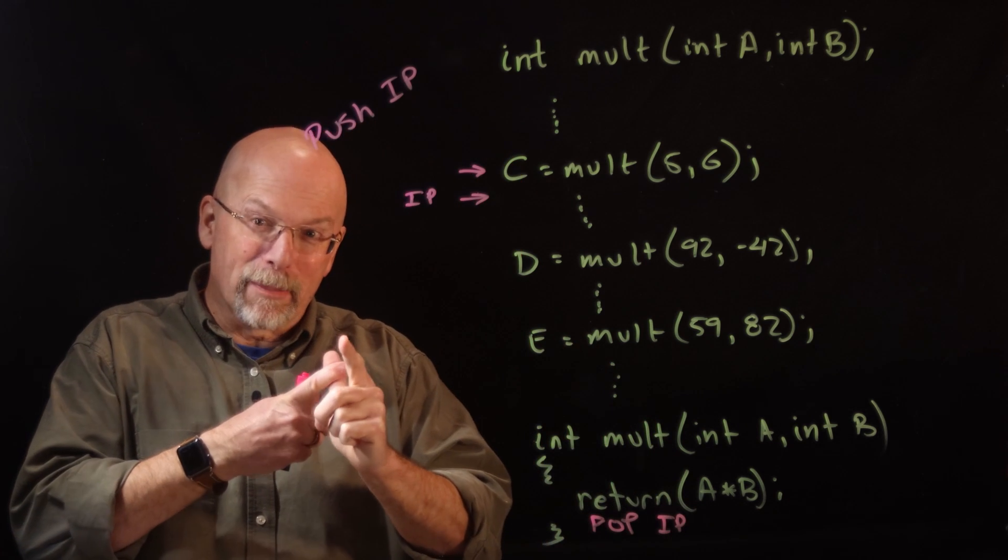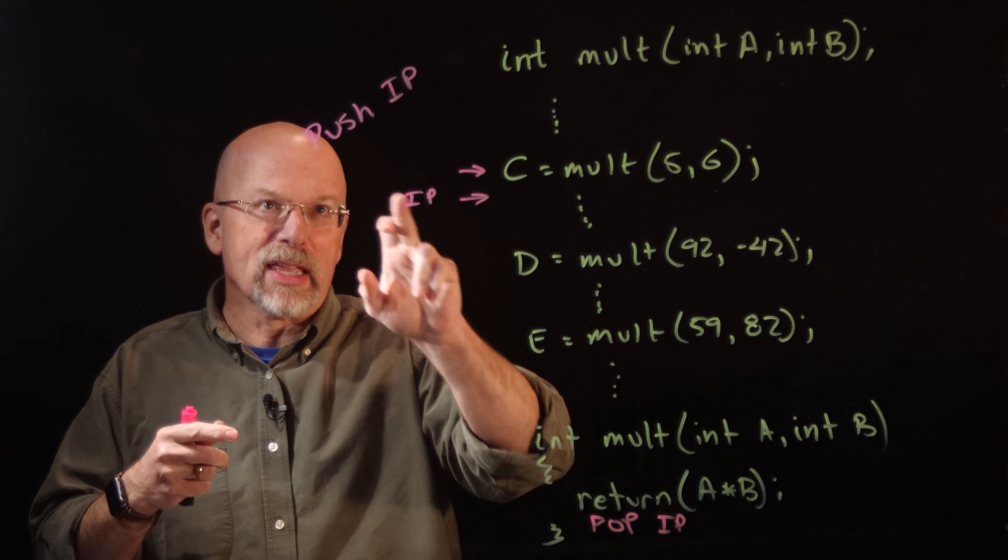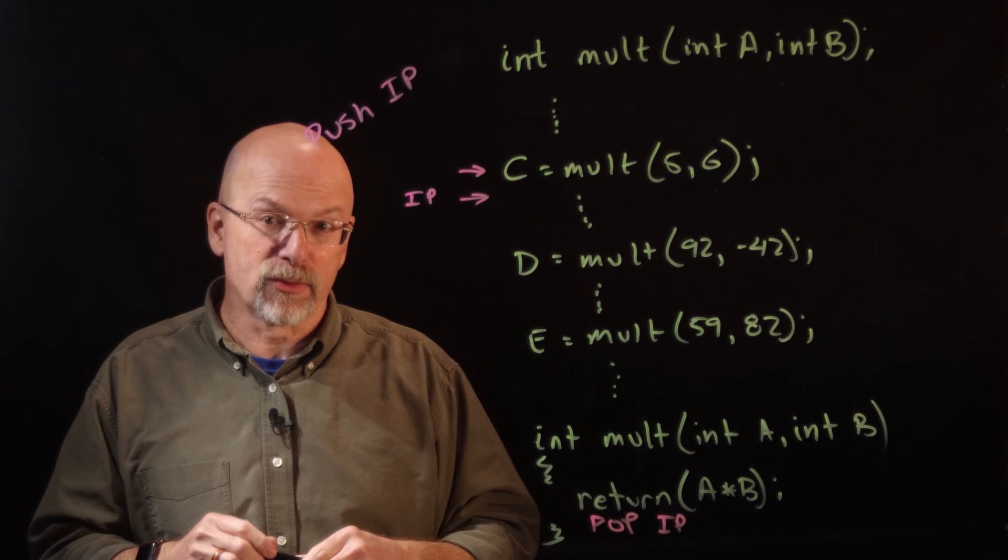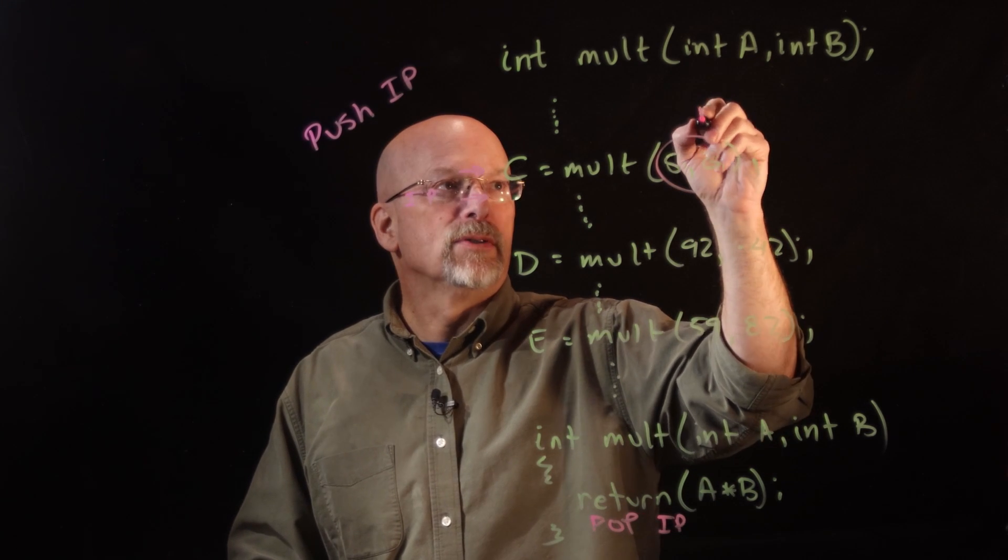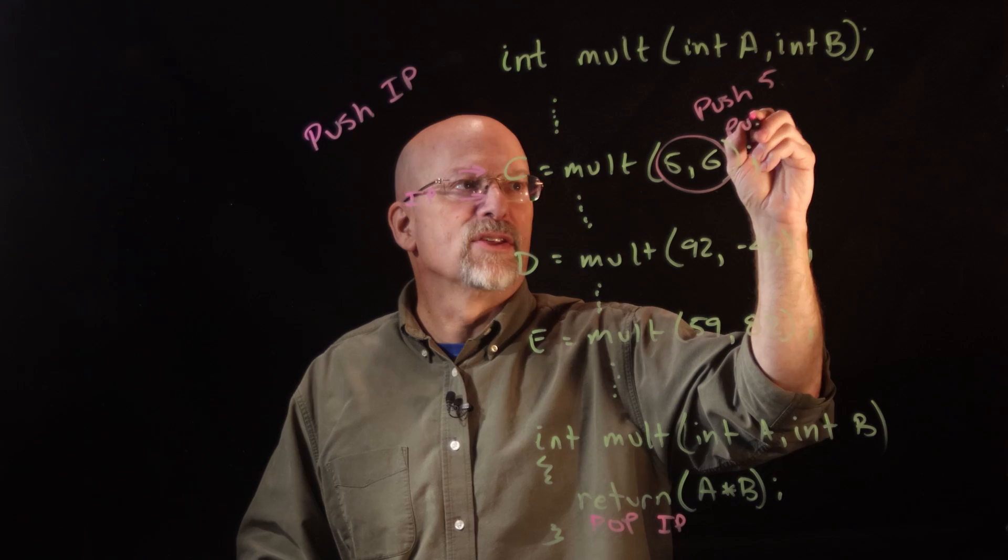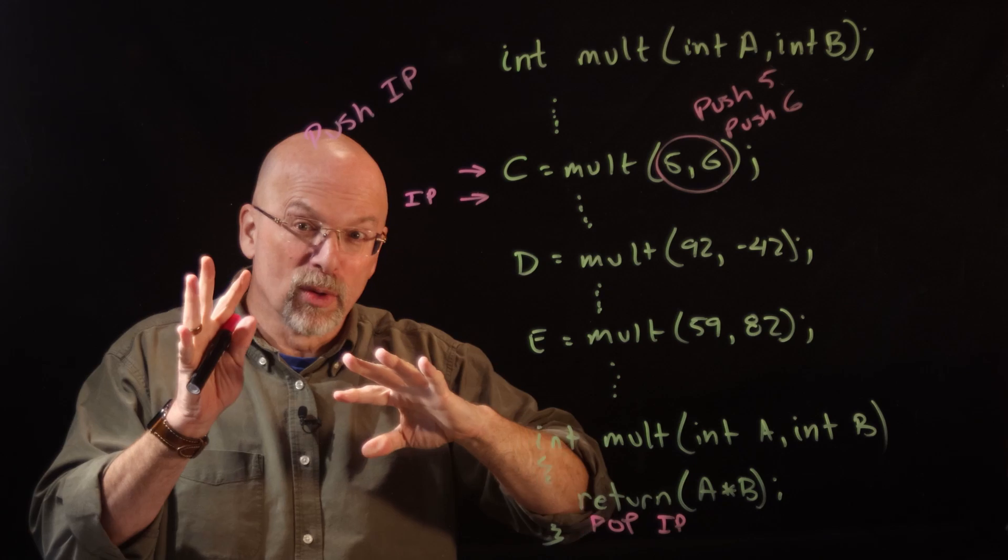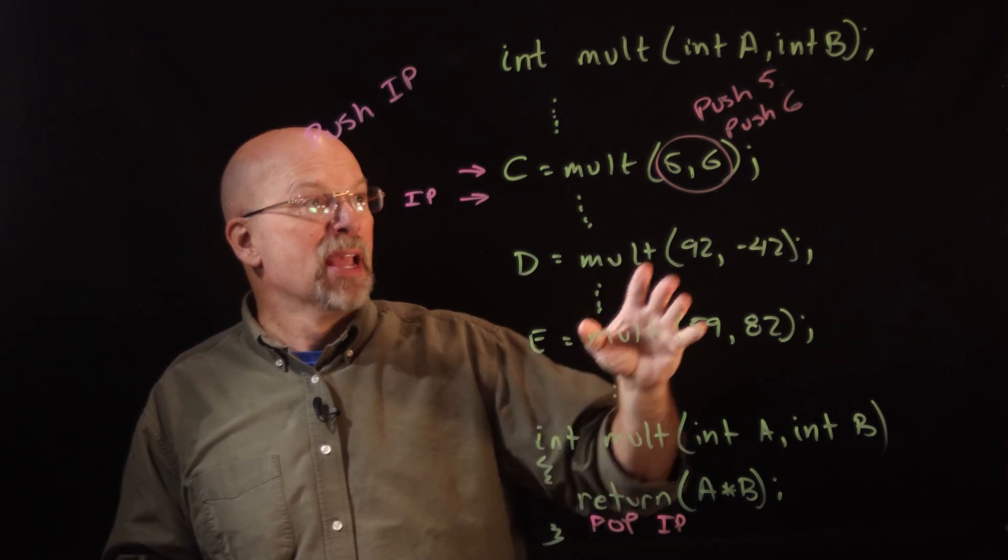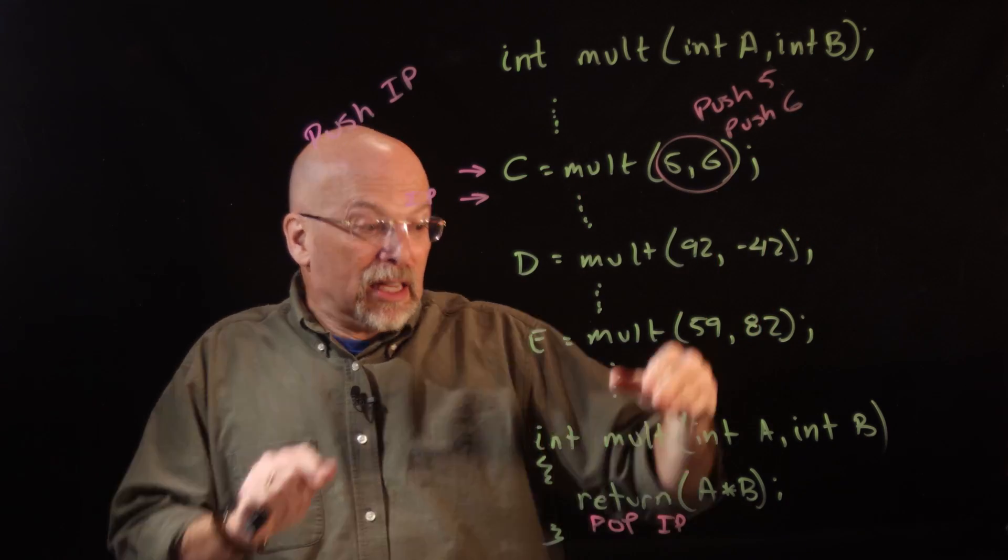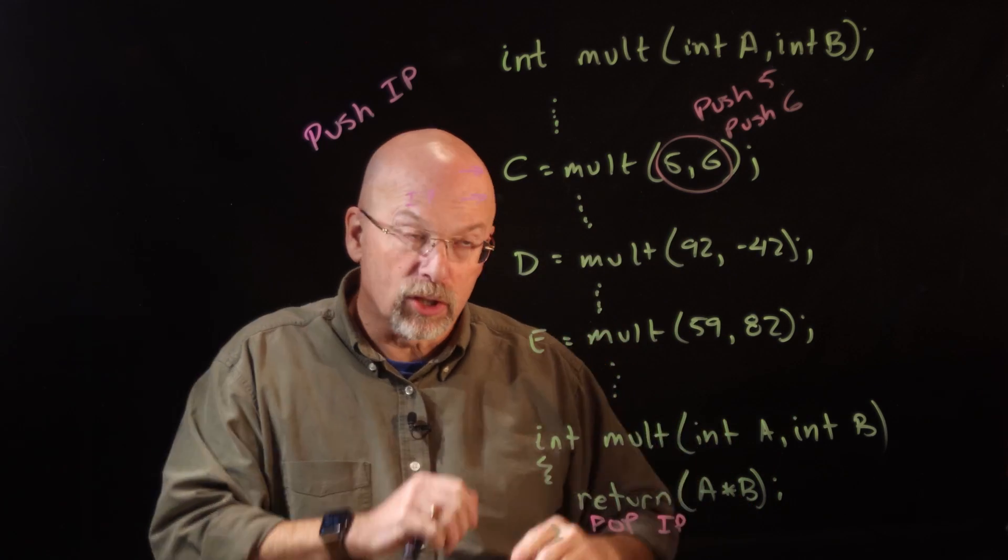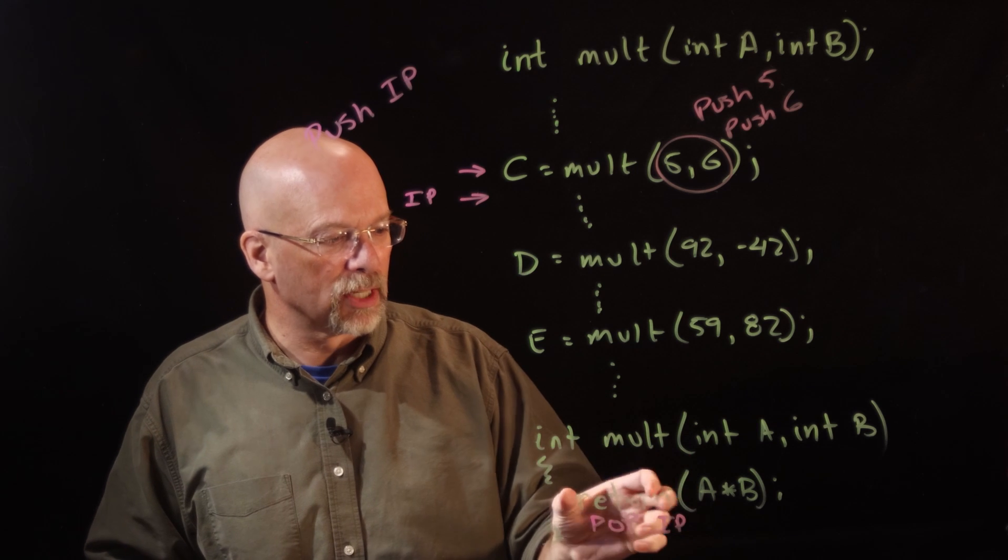So we've already talked about using the stack to temporarily store register values just to make room, but now we also have it can be used as a place to hold a return address for a function. Some processors also pass variables by pushing these values. They'll load 5 into a register and push it, and then they'll load 6 into a register and push it. So the stack could also be used to pass parameters from the calling function down into the function itself.